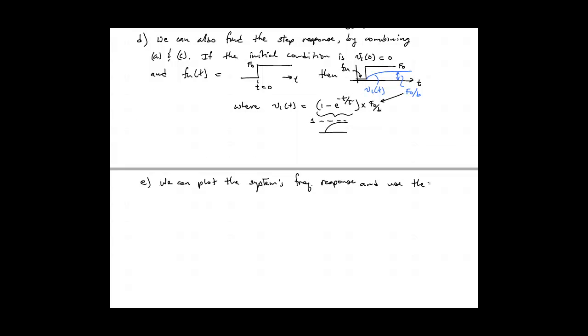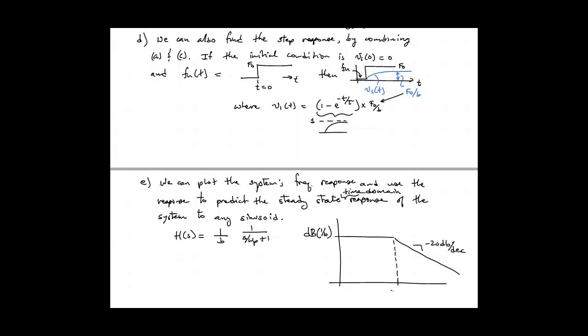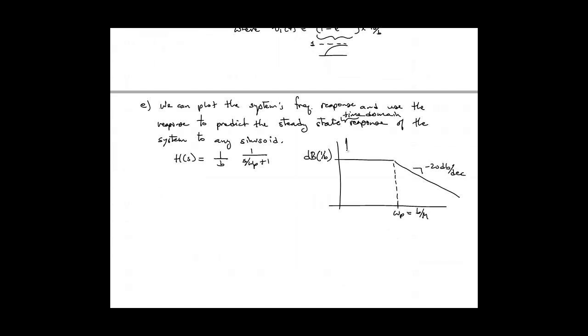We can also look at the frequency response of the system. And in this case, when we plot that, we see that it is a low pass filter response. In other words, it passes low frequencies, but at higher frequencies above omega p and much, much greater than omega p, it essentially attenuates the response by, the response is attenuated by